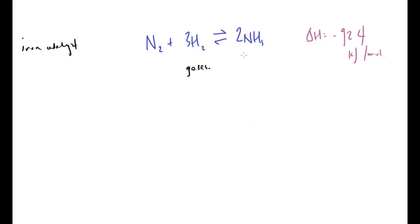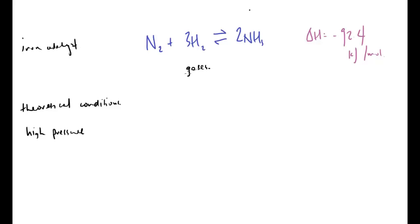For maximum yield of ammonia, what are the ideal theoretical conditions? For pressure: the lower number of moles is on the right side - two moles of ammonia versus four moles on the left. So increasing pressure shifts the equilibrium right, giving more ammonia. For temperature: left to right is exothermic, so decreasing temperature favours the exothermic reaction and shifts equilibrium right. Therefore, the ideal theoretical conditions for maximum yield are high pressure and low temperature.